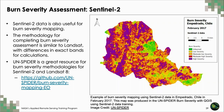Landsat isn't the only satellite platform you can use to map burn severity. Sentinel-2 is also a great option, providing a higher spatial resolution of 20 meters. The methodology for calculating NBR and dNBR for Sentinel-2 is similar to that of Landsat. The map shown was created as part of a training by the United Nations Space-Based Information for Disaster Management and Emergency Response Program, or UN-SPIDER, using Sentinel-2 imagery in QGIS to map burn severity of February 2017 fires in Empedrado, Chile.